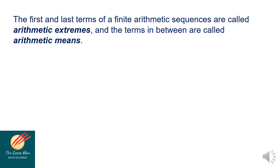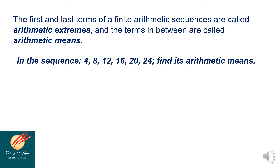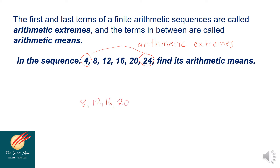The first and the last term of a finite arithmetic sequence are called arithmetic extremes, and the terms in between are called arithmetic means. For example, in the sequence 4, 8, 12, 16, 20, and 24, the numbers 4 and 24 are the arithmetic extremes, and therefore the numbers 8, 12, 16, and 20 are the arithmetic means.